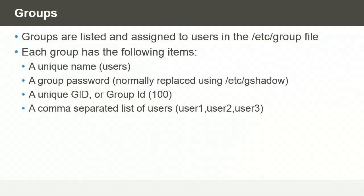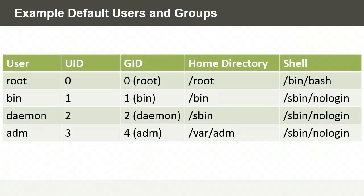Groups are listed and assigned in the /etc/group file. Like the other files, this one too is a standard text file. Each group has the following items: a unique name, a password which could be assigned to the group, the group ID which is a numeric value, and a comma-separated list of users that are members of that group. Some examples of default users and groups include the root user, which always has a user ID of 0. Most Linux distributions also have a group called root, which the root user is a member of.